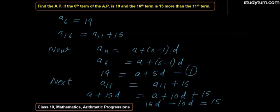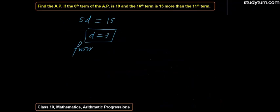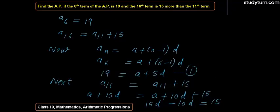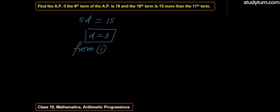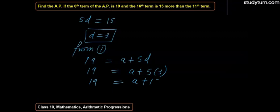Now we put the D value in the first equation. From equation 1 we have 19 is equal to A plus 5D. 19 is equal to A plus 5D. 19 is equal to A plus 5 into 3. 19 is equal to A plus 15. A is equal to 4.